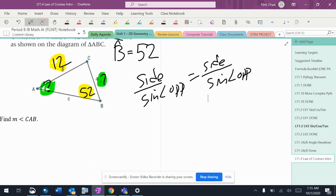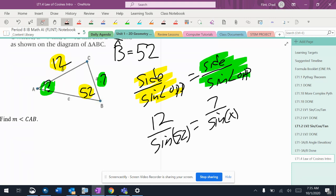Okay, let's plug in what we got. We'll make this one the yellow one, this one the green one. So I'm going 12 over sine of 52 equals 7 over sine of x.